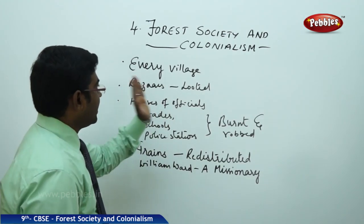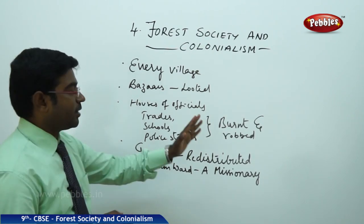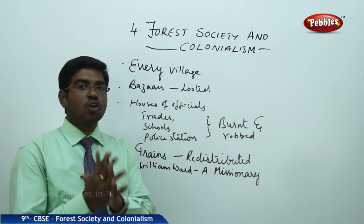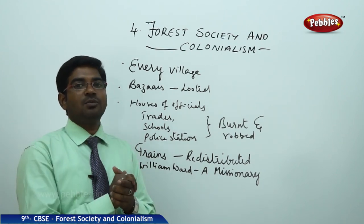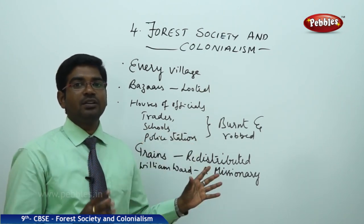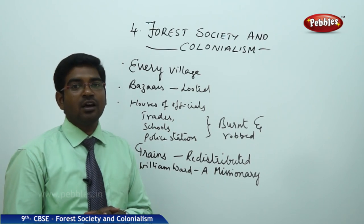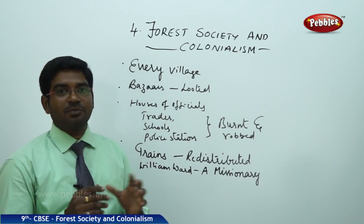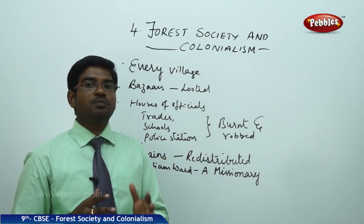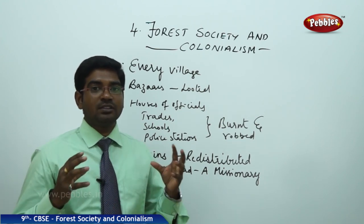Every village started to help somehow for this rebellion movement. Bazaars were looted. Houses of officials, traders, schools, and police stations were burnt and robbed. The grains available were redistributed to all the villagers. The rebellion was targeted to burn offices, collect grains, and redistribute them. This was observed by a missionary observer known as William Ward, who stated that from all sides people were streaming into the Jagdalpur police station — school masters, forest peons, and police coming in.